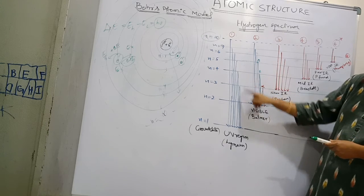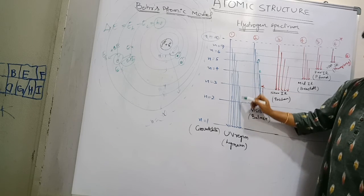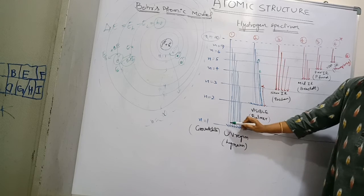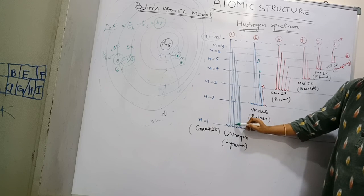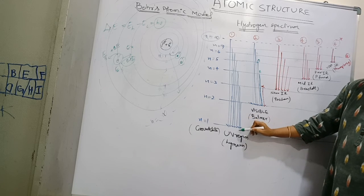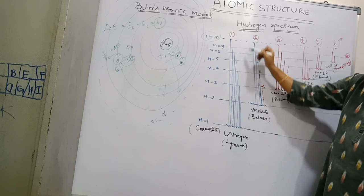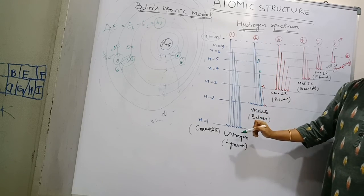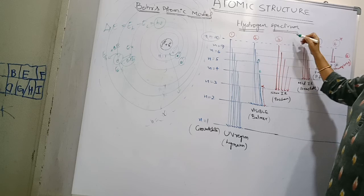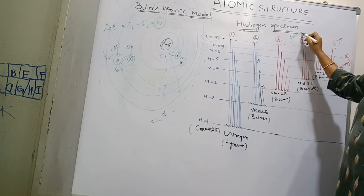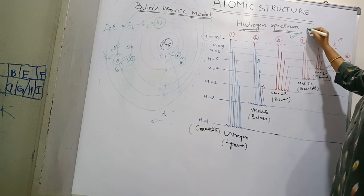Here, each transition corresponds to a spectral line. In each series the line is pointing downwards, meaning light is emitted. So whatever spectrum we are discussing here is an emission spectrum.